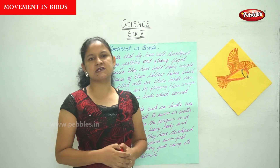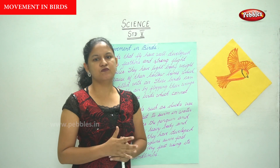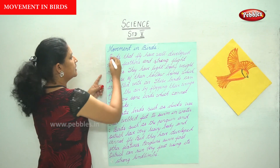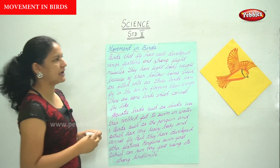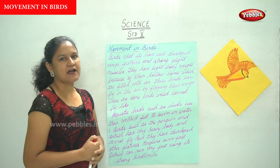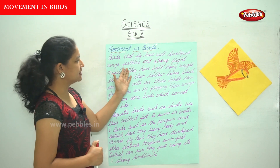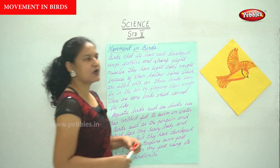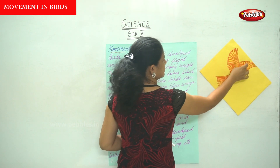We've seen movement in insects, movement in mammals, movement in amphibians. Now we are going to see movement in birds. So how do birds move? Birds that fly have well-developed wings, feathers, and strong flight muscles. If you have a look at a bird, you can see that it has wings and feathers.